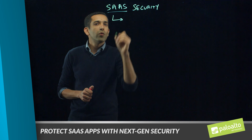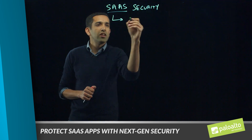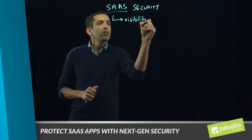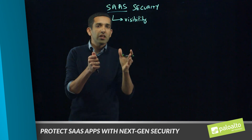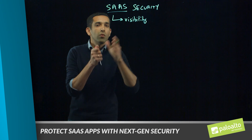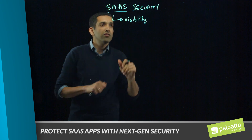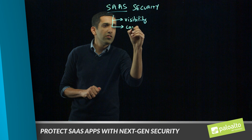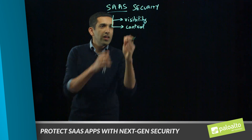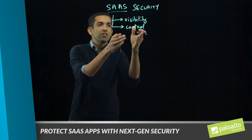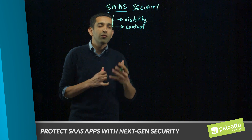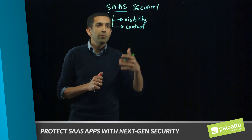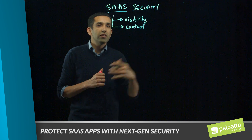There are four different requirements that we have for SaaS applications. The first one is visibility — you want to be able to know all the different applications in your network, who's accessing what applications, and what sort of data is going to these different applications. The second one is control: now that I have visibility, I start to build policies on these applications and actually enforce control on the access to them.